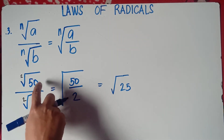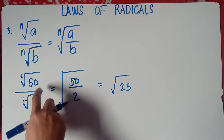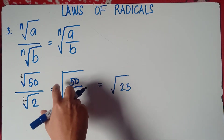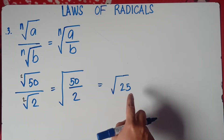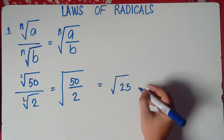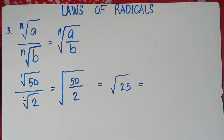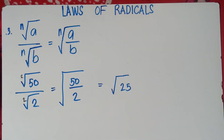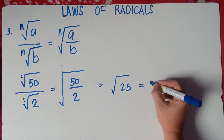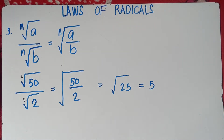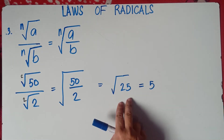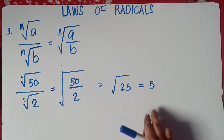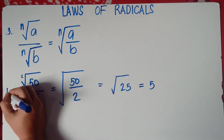The numbers inside the radical symbol are called radicands. So we divide radicands 50 and 2, giving us the square root of 25. The square root of 25 is 5, because 5 times 5 is 25. You think of a number that when you multiply it by itself you get 25, and that is 5. So that's the answer for example number 1.